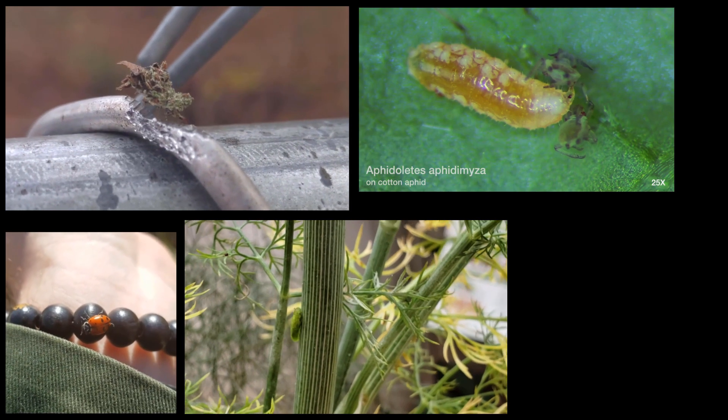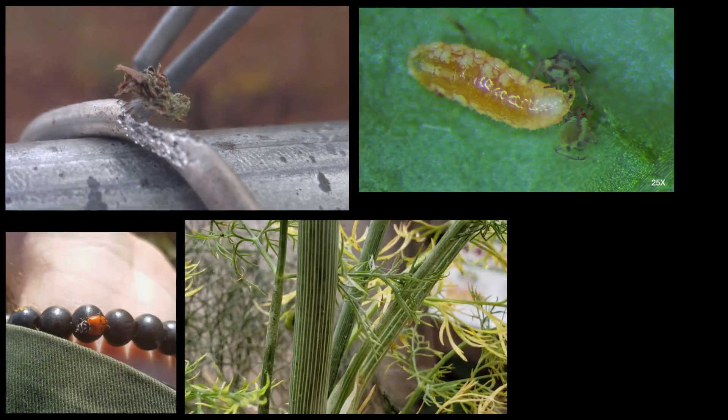There are many wasp families associated with aphid parasitization, like Aphidiidae, Aphelinidae, and Braconidae. One notable generalist being Diaeretiella rapae, and somewhat more species-specialized parasitic wasps, like those in the genera Lysiphlebus, Aphelinus, and Aphidius.